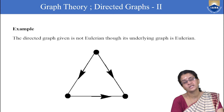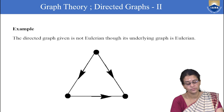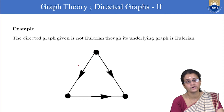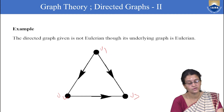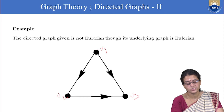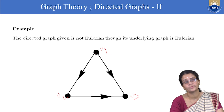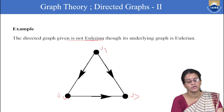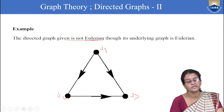Consider this graph with vertices V1, V2, and V3. If we remove the directions on the edges, we get an underlying graph. If starting from V1, we can go to V2, then to V3, but it is not possible to travel from V3 back to V1. So this directed graph is not Eulerian, even though its underlying graph is Eulerian — because we can find a trail from any vertex going through all edges in the undirected version.